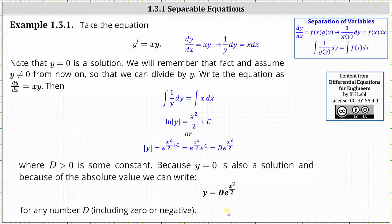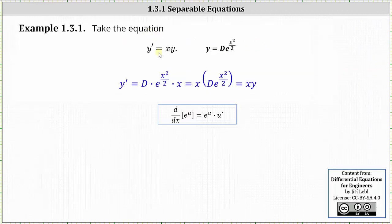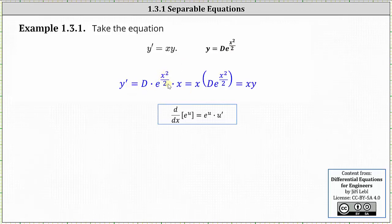Let's verify this is a solution to the given differential equation, which means we need to verify that y prime is equal to x times y. We know y, so let's find y prime. Y prime requires the chain rule, and the derivative formula is shown below. Y prime is equal to d times e to the power of x squared divided by two times the derivative of x squared divided by two, which is x, giving us x times d e to the power of x squared divided by two, which is equal to x times y, verifying our general solution is correct.